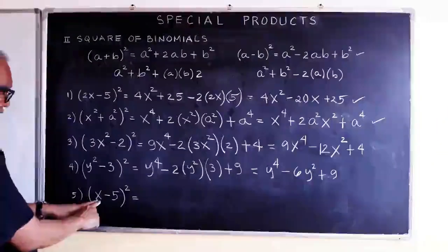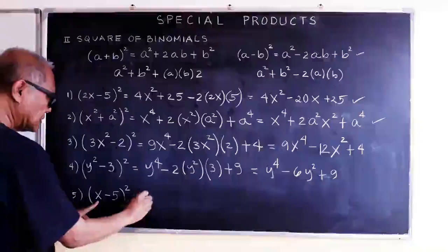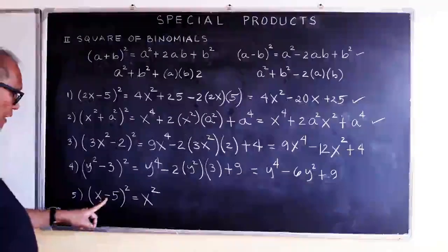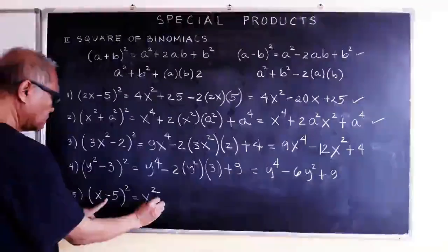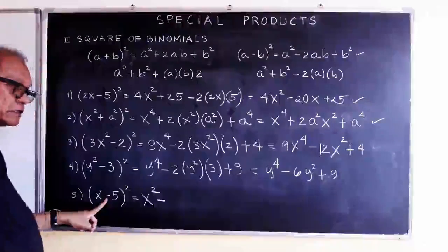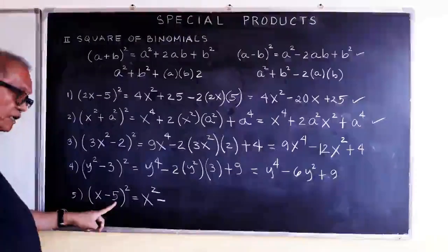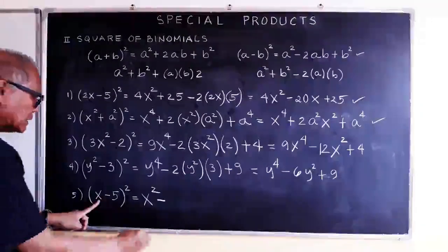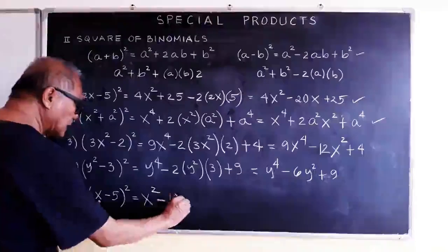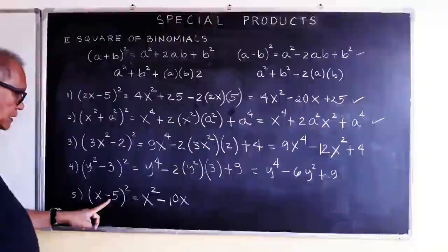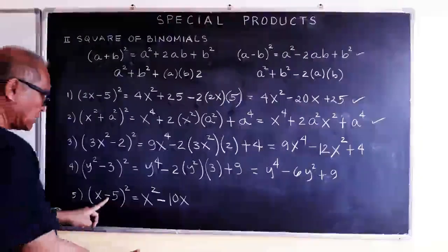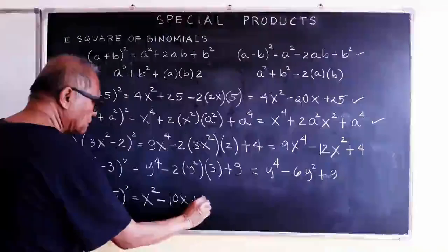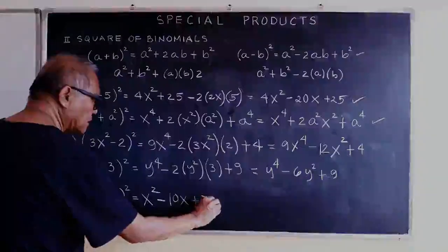So we have x times x is x squared, and then minus — 2 times 5 is 10, times x is 10x — and then negative 5 times negative 5 is positive 25.